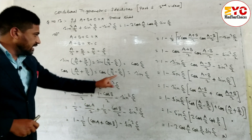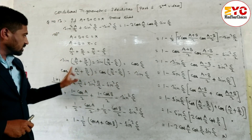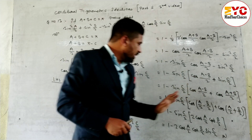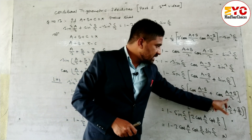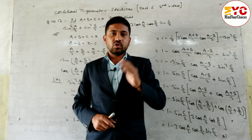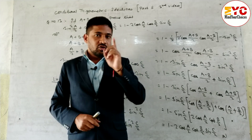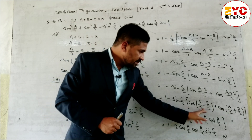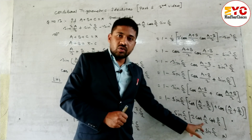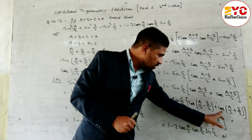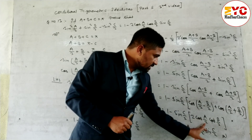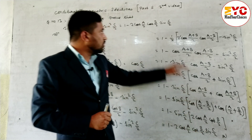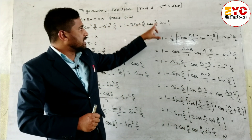We already found that sin(c by 2) equals cos((a plus b) by 2). Substituting: the bracket becomes cos((a minus b) by 2) plus cos((a plus b) by 2), which matches the formula cos(A minus B) plus cos(A plus B) equals 2 cos A cos B. Opening the bracket gives 1 minus 2 cos(a by 2) cos(b by 2) sin(c by 2), which is exactly what we had to prove.